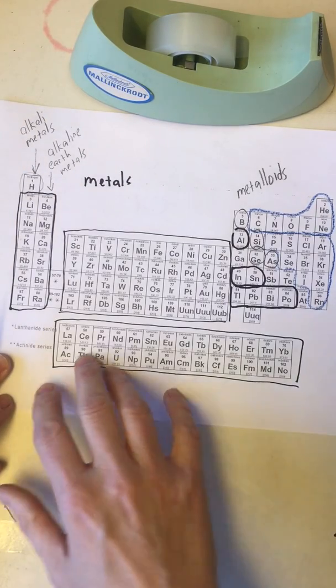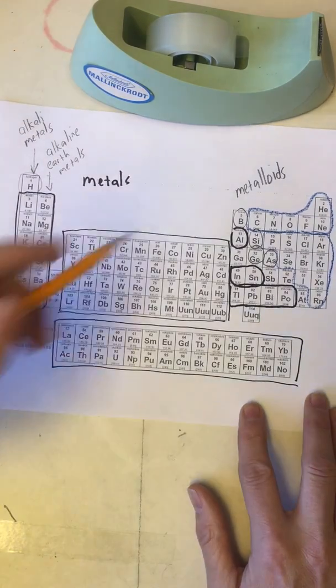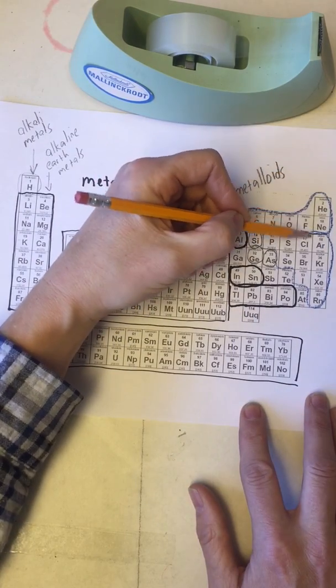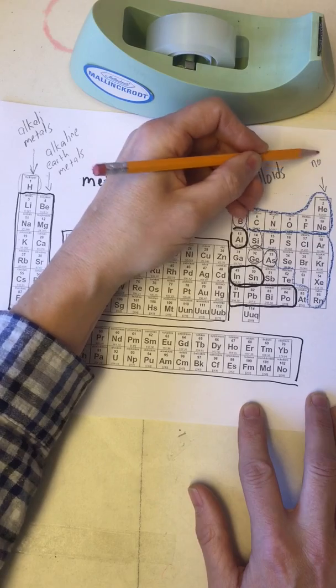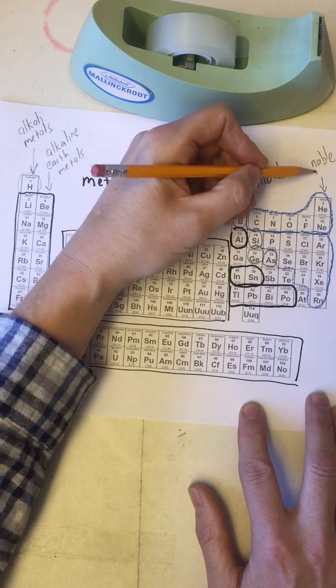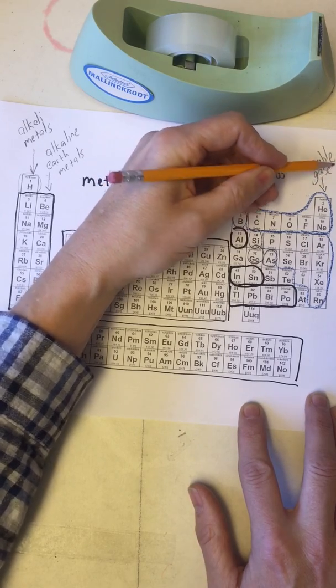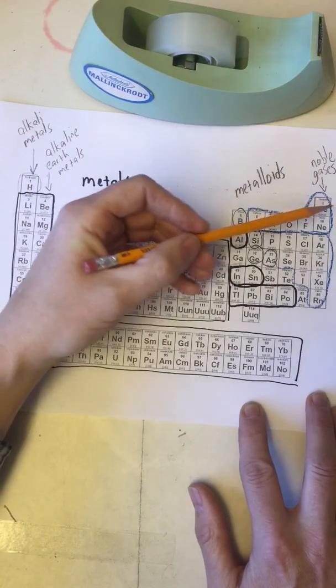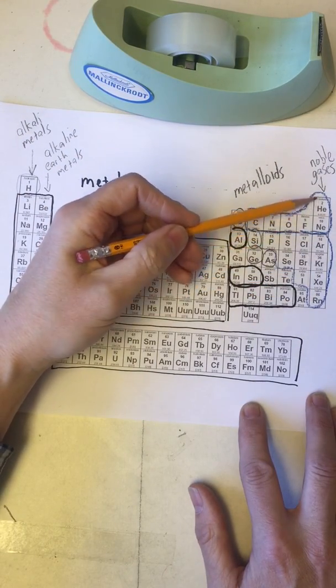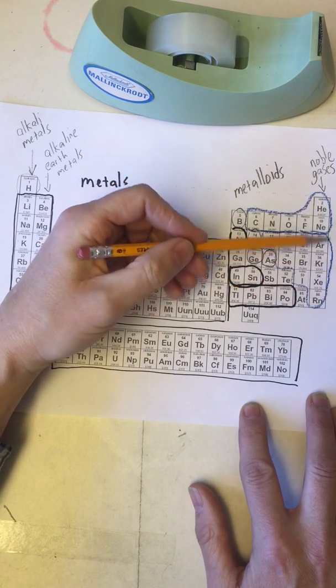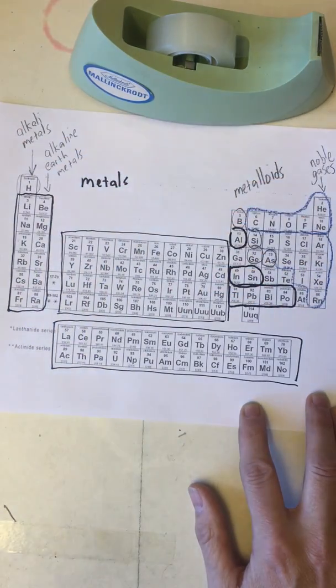The third category that we'll concern ourselves with are the noble gases, those are over here. And notice they're all gases at room temperature and they're all unreactive. Helium, neon, argon, krypton, xenon, and radon. This column right here, similar chemical properties in the sense that they're not chemically reactive.